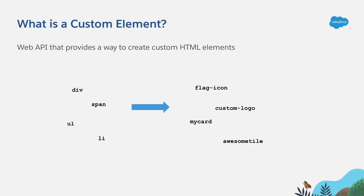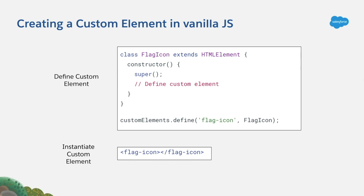Let's start talking about the custom elements specification. With this specification, you will be able to create custom HTML elements that you can use in your HTML pages as if they were standard HTML elements. In vanilla JavaScript, this is the way in which you create custom elements. First, you need to define a class, and the class needs to extend HTML element. Classes are part of ECMAScript 6, and they allow you to define the behavior for the custom element.